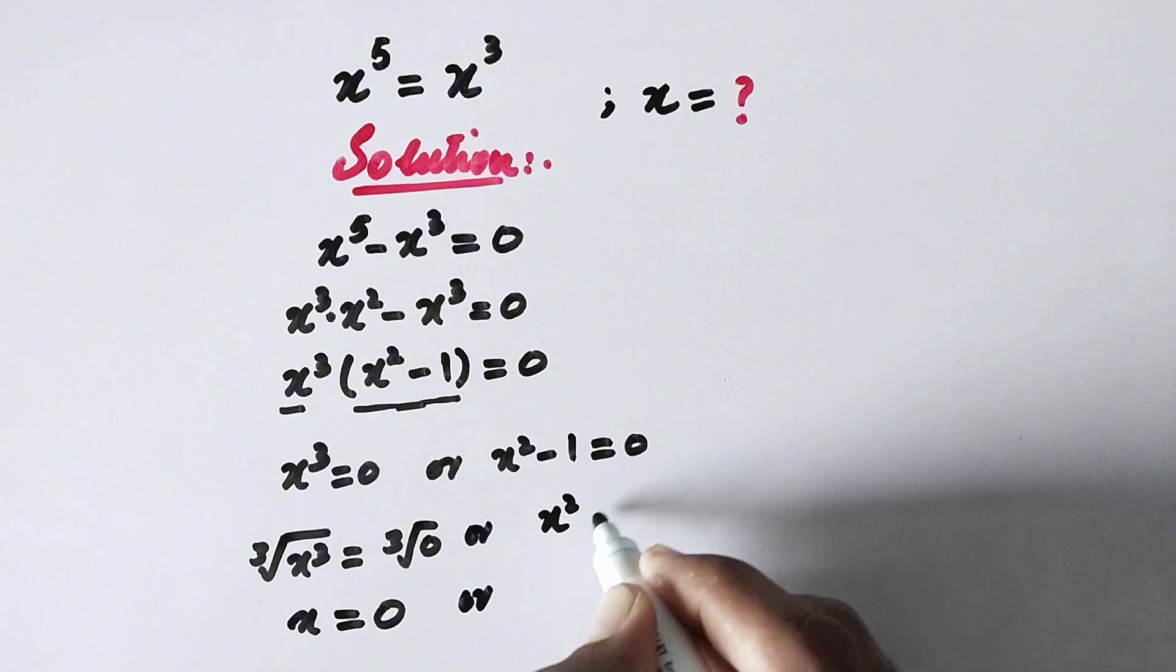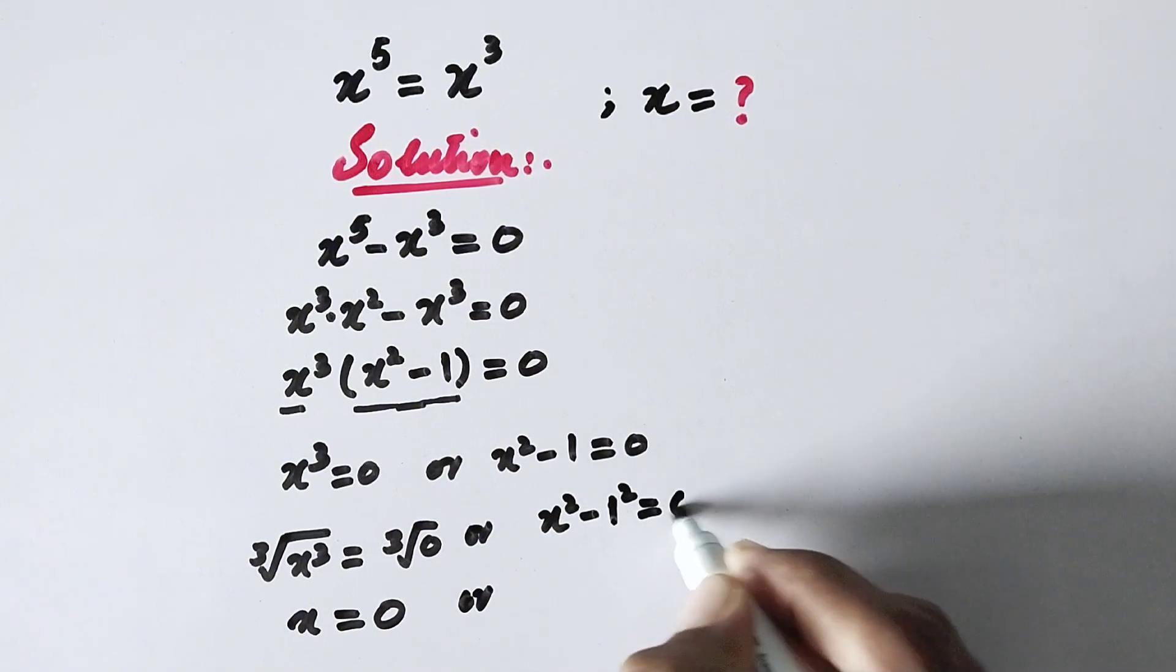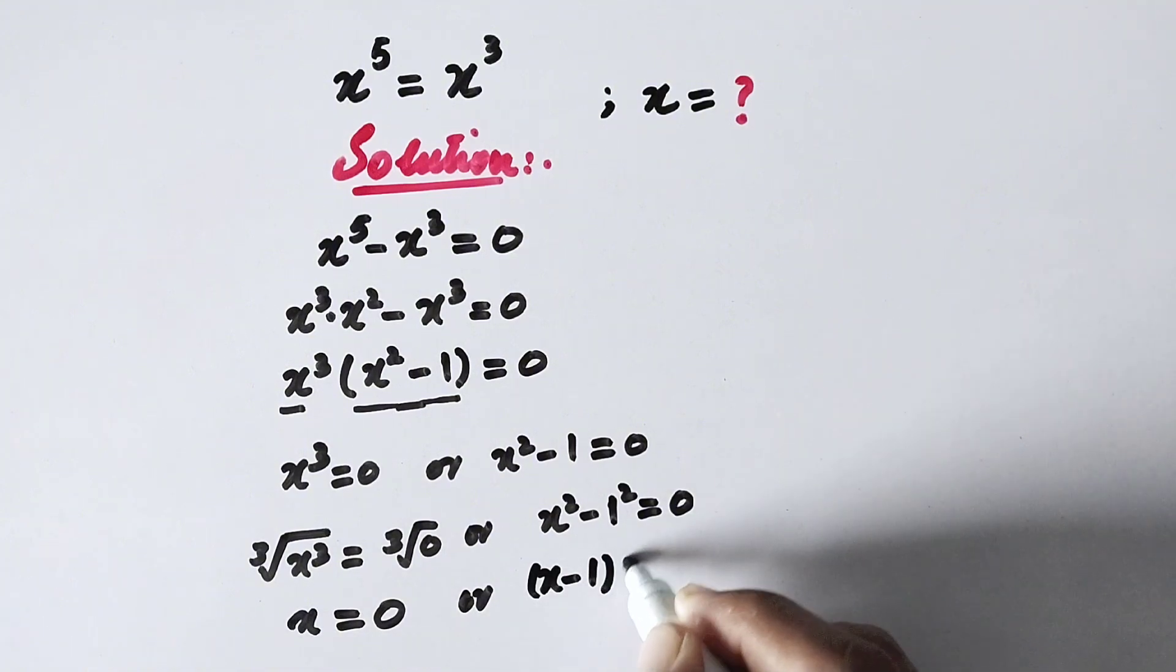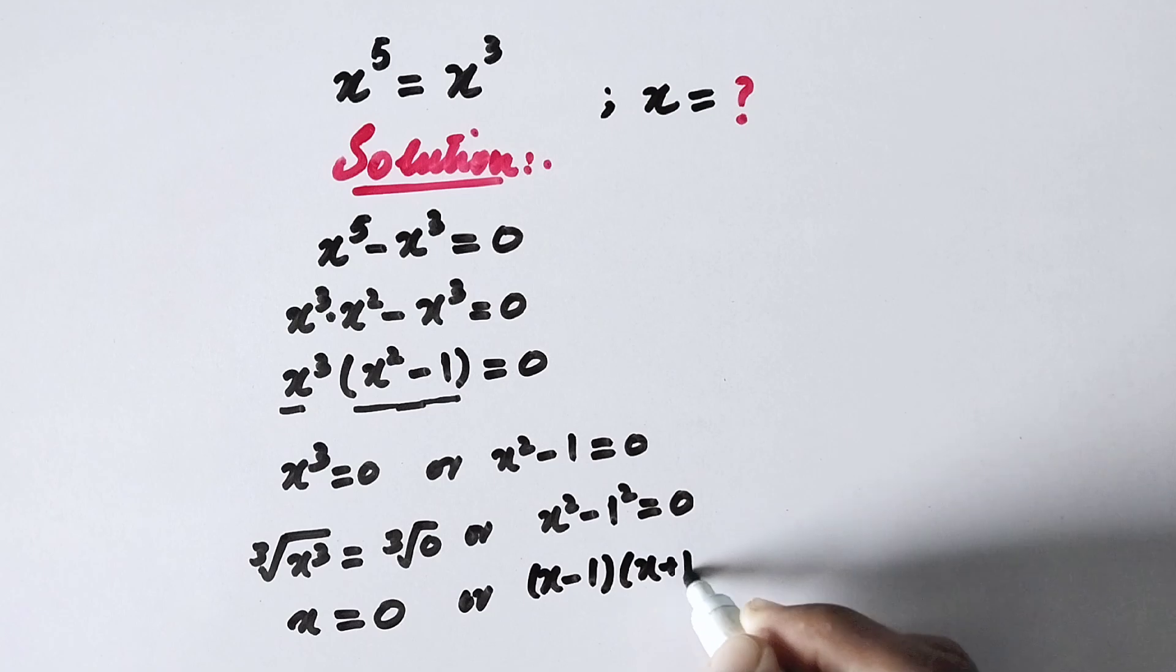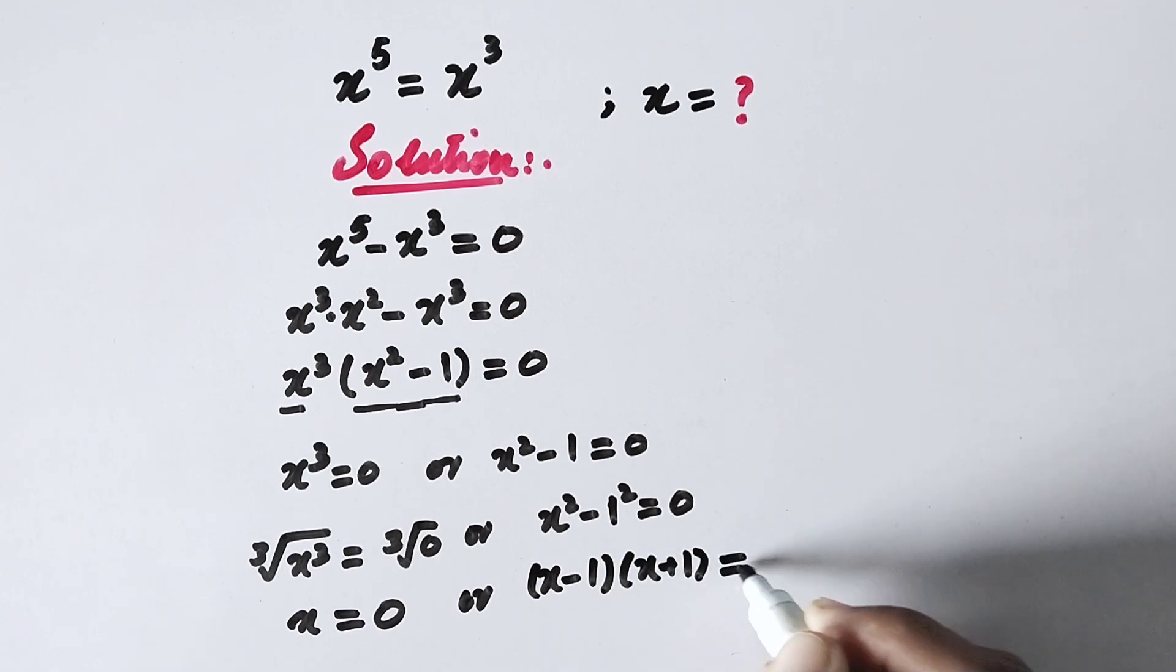While on this side it can be written in this form: x squared minus 1 squared is equal to 0. Or now here we can apply an algebraic formula in this way: x minus 1 times x plus 1, equal to 0.